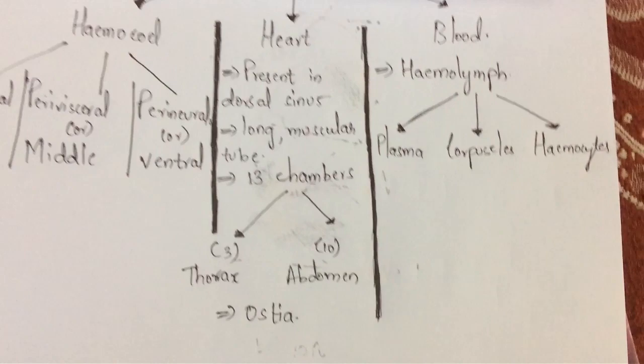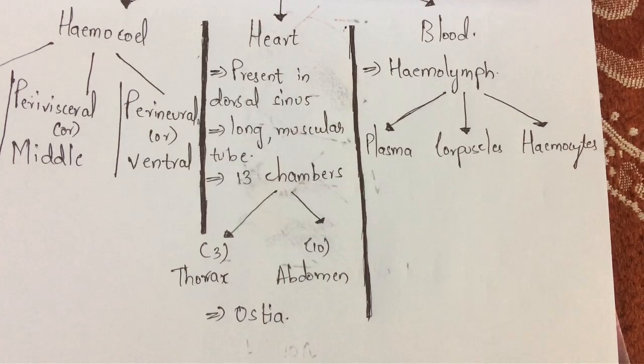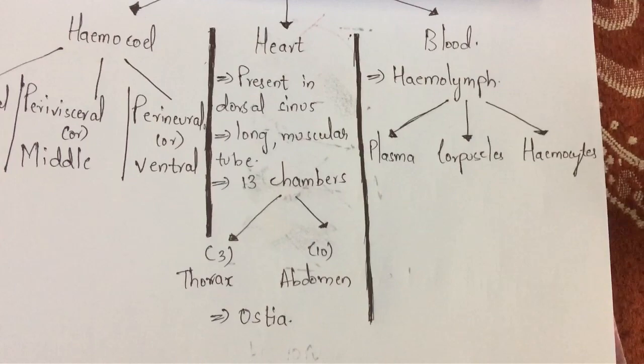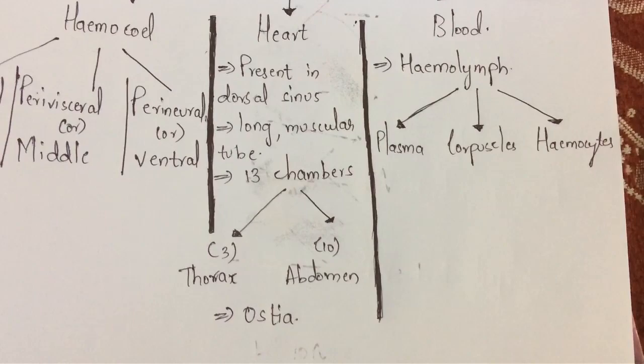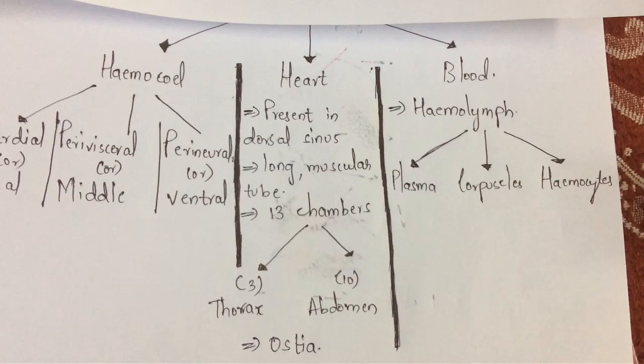There are also ductless glands present in the body of Periplaneta americana. The main function of these ductless glands is to release secretions directly into the blood. That blood then transports these secretions from one part to the target organ. These are the three main functions of the blood of Periplaneta americana.